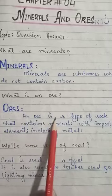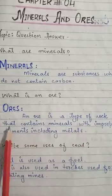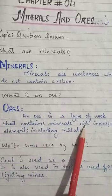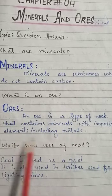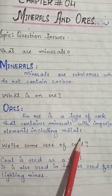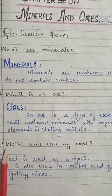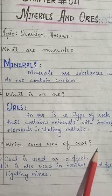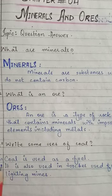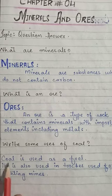For question two, put the heading 'An Ore.' Answer: An ore is a type of rock that contains minerals with important elements, including metals.